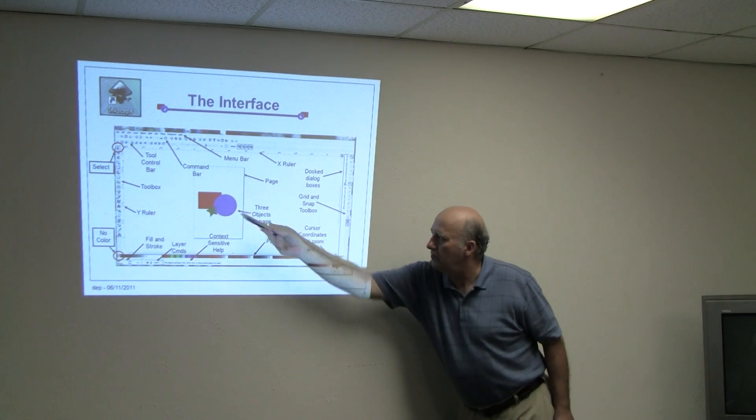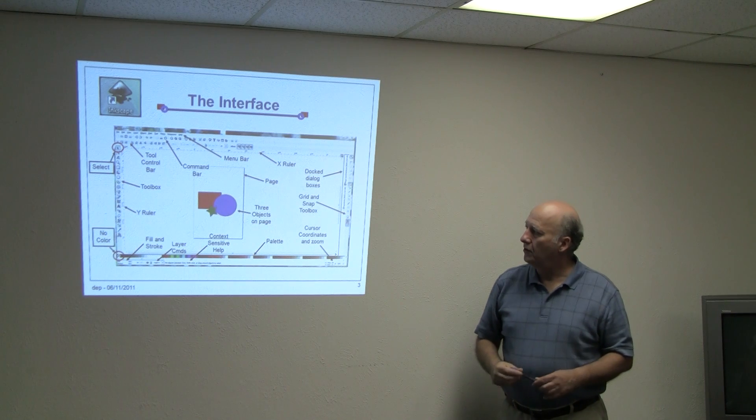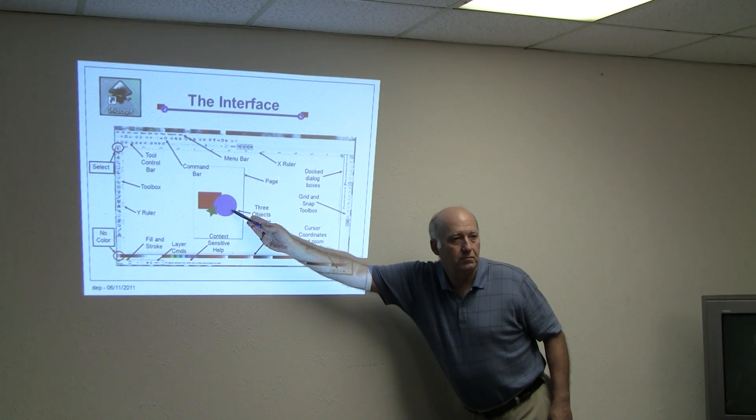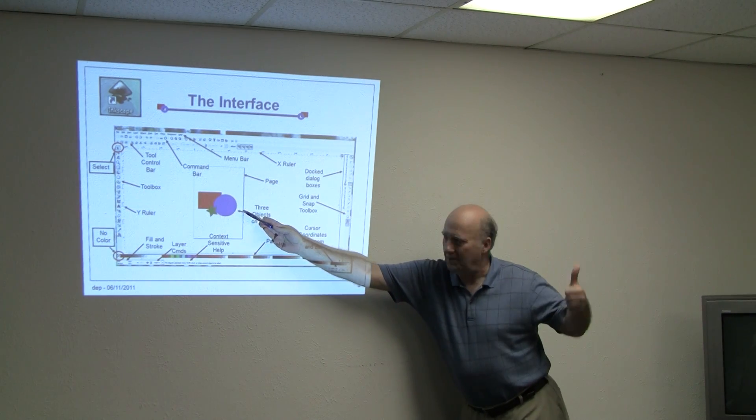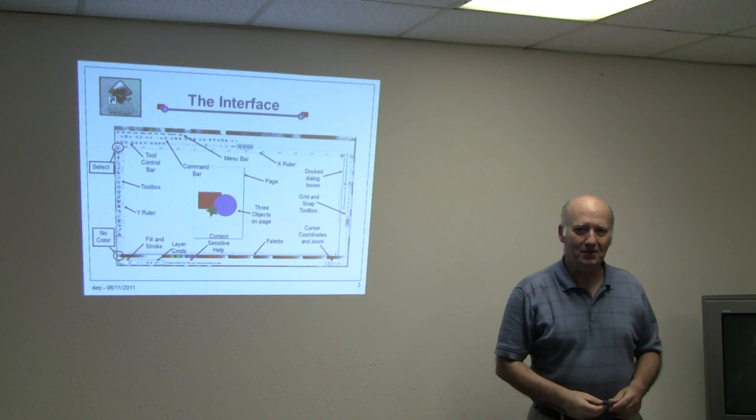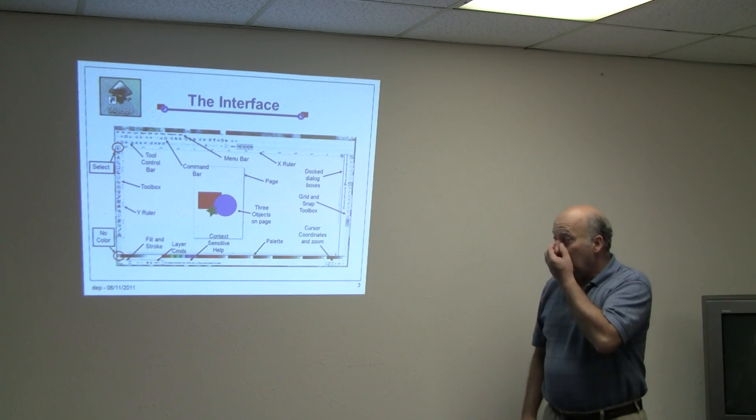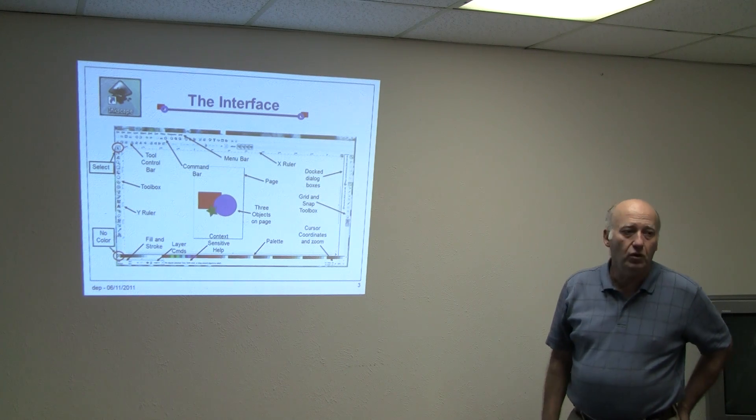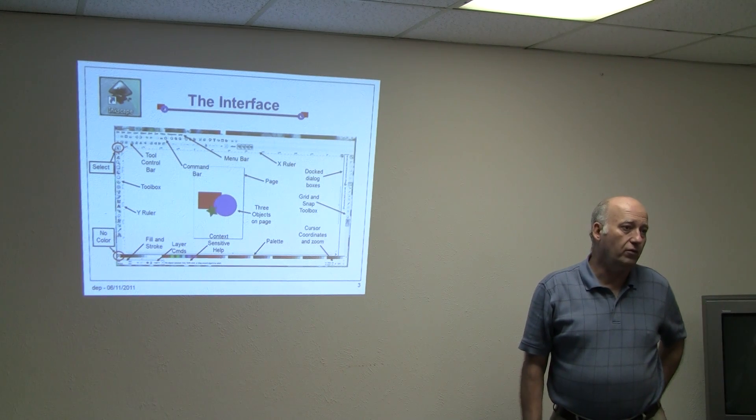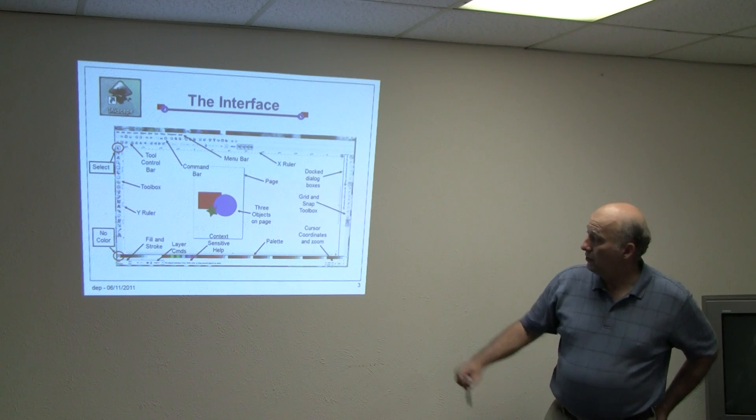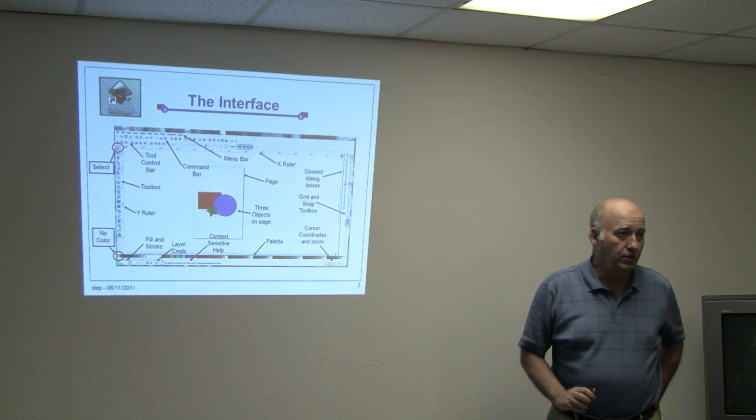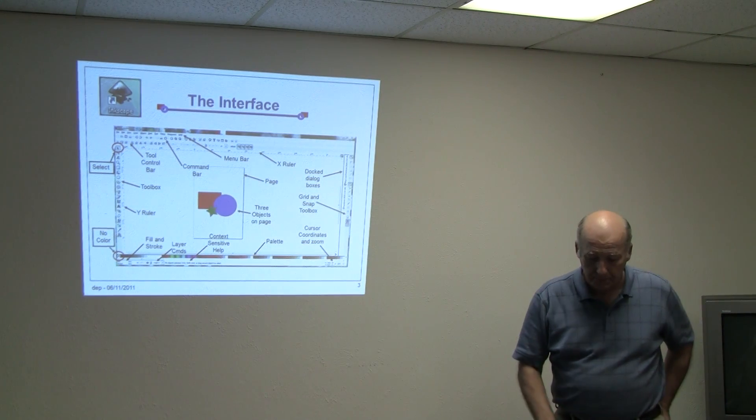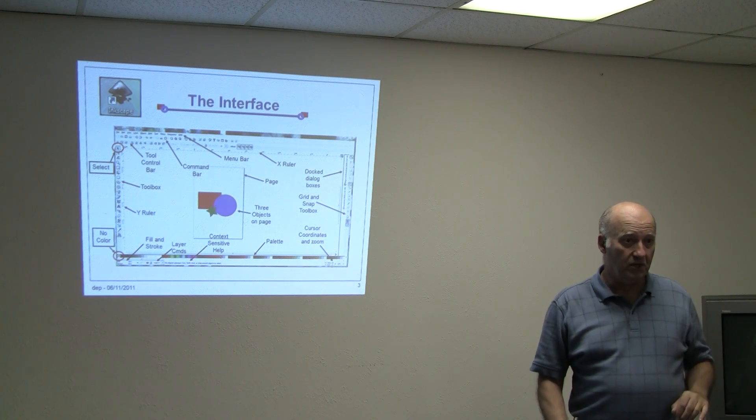Then, finally, you have your rulers up here on the top and on the Y ruler on the other side. Here's an example of a couple of objects. So, what's that blue? Fill. That's on it. Good. I just want to make sure. So, like, if you want to set a stroke or a fill to no color, that little red X in the corner is what does that. Does everybody feel a little comfortable now with the interface?